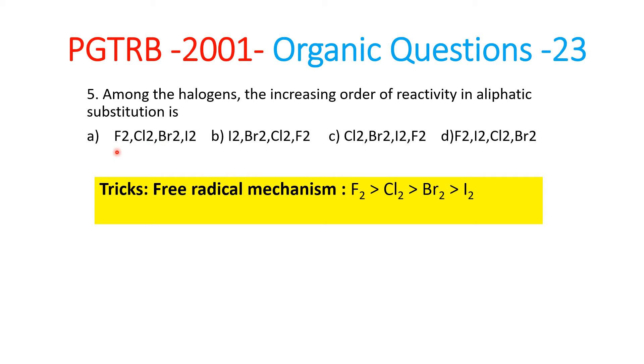So if you see the size, fluorine is more stable, then chlorine, then bromine, and then iodine. So the reactivity of fluorine is more, then chlorine, then bromine, and then iodine.